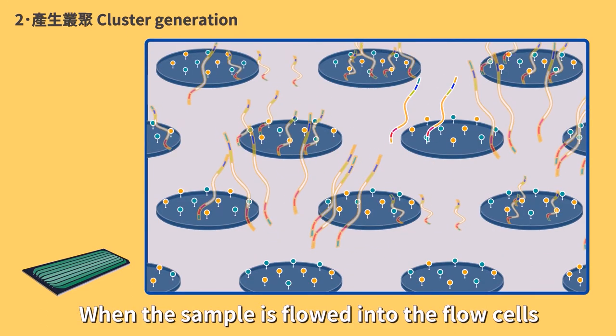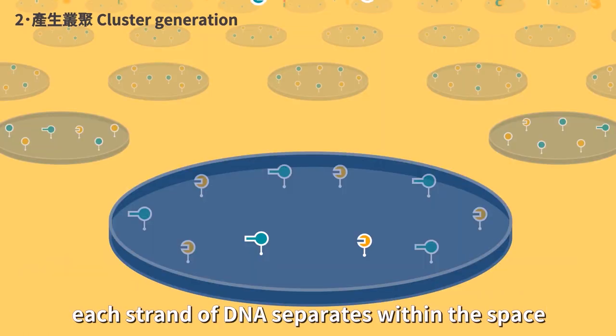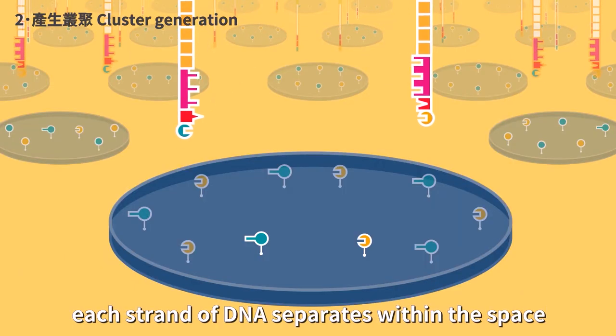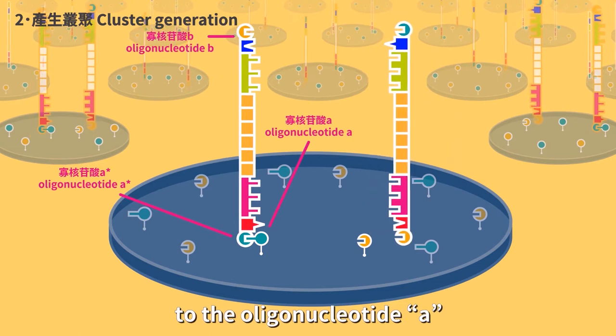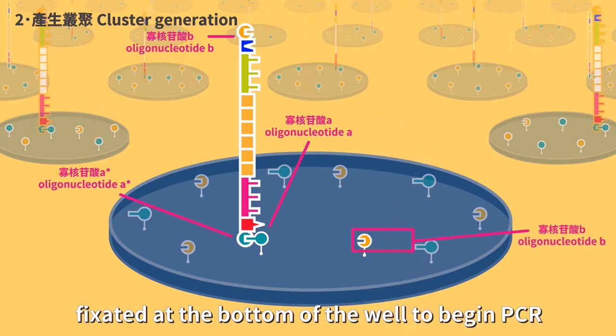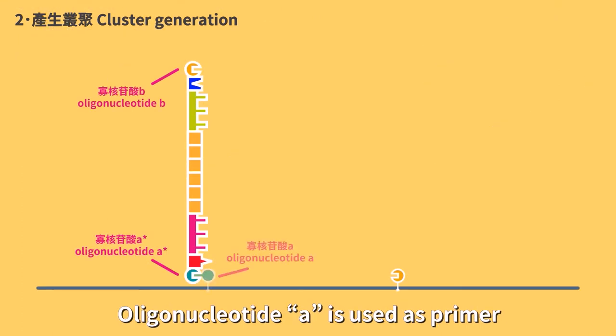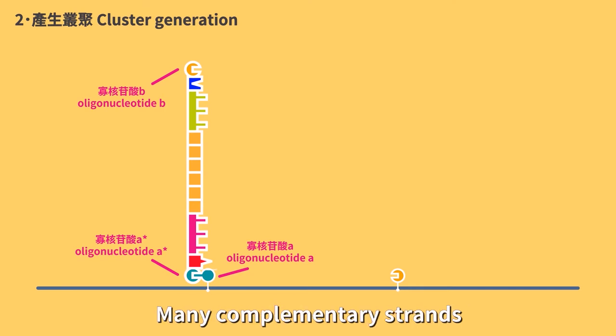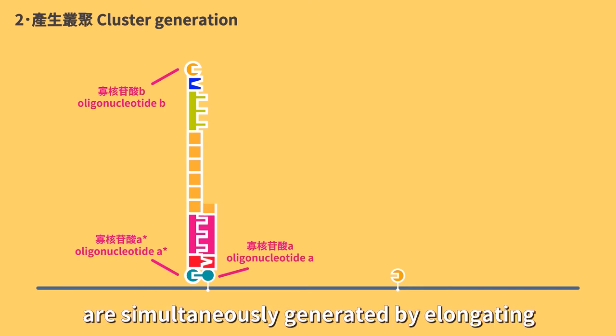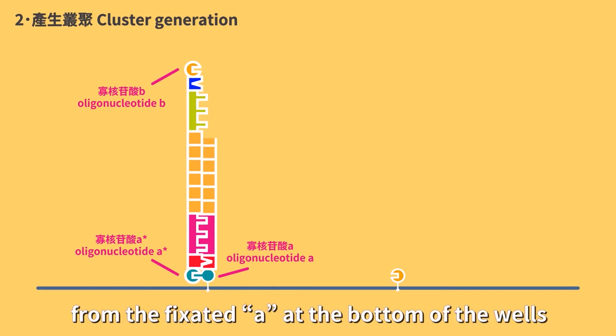When the sample is flowed into the flow cells, each strand of DNA separates within the space, and the A star end randomly binds to the oligonucleotide A fixated at the bottom of the well to begin PCR. Oligonucleotide A is used as primer and the bound DNA is used as template. Many complementary strands are simultaneously generated by elongating from the fixated A at the bottom of the wells.